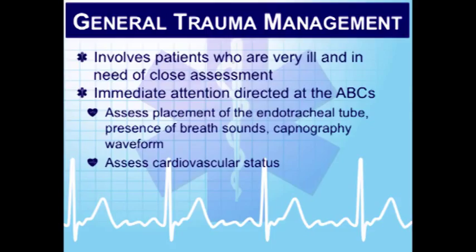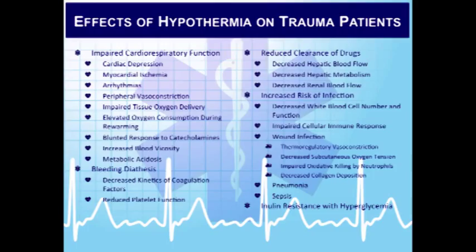Repeated assessments can decrease the possibility of missed injuries, which is especially important with multi-system trauma patients. Hypothermia is never good for our trauma patients. Many trauma centers keep their trauma rooms warmer than the rest of the emergency department because trauma patients do not do well if they're hypothermic. We need to remember this when we find patients in cold weather environments or when we expose them during our exam. Some patients require crystalloids or blood, and we need to try to provide them with warm fluids, because cold fluids can add to bad outcomes.